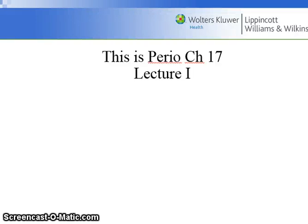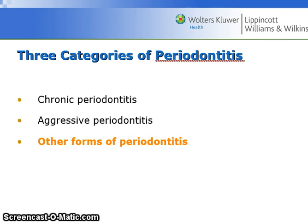Hello students, this is PERIO Chapter 17, Lecture 1. There are three categories of periodontitis: chronic, aggressive, and other forms. This chapter covers the other forms. Some of them we have already covered, so I will move quickly through these.